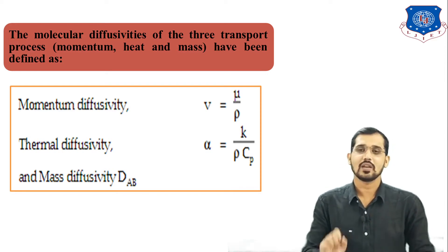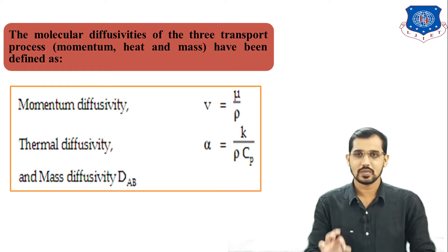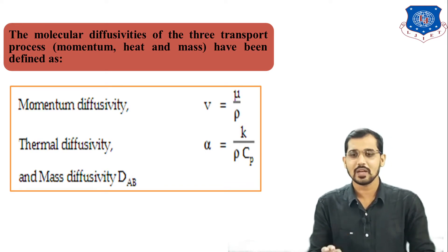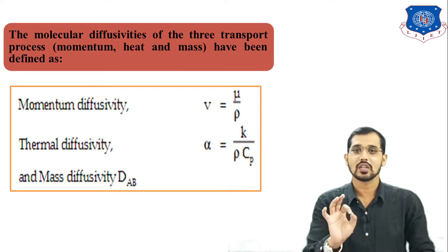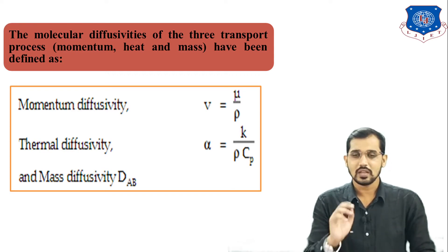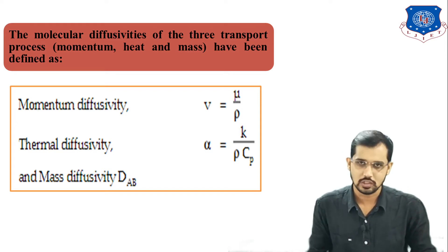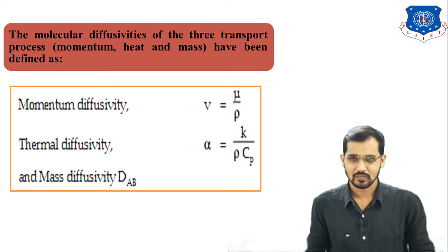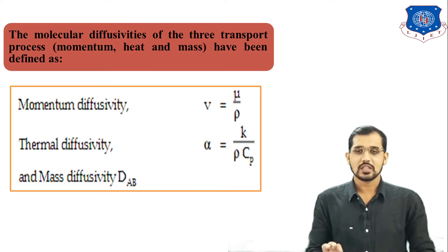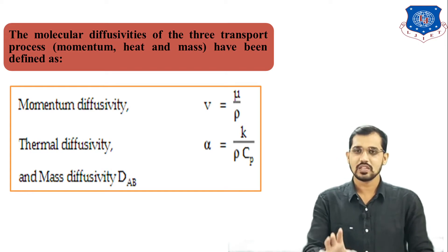The second transport process is heat transfer, where the driving force is temperature difference. Thermal diffusivity is also available, represented by α = K/(ρCp), where K is thermal conductivity — note that in heat transfer K is thermal conductivity, not mass transfer coefficient — ρ is density, and Cp is specific heat at constant pressure. Thermal diffusivity is represented by α.